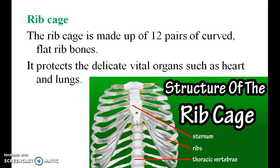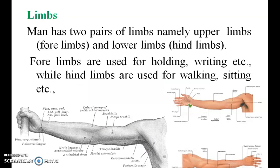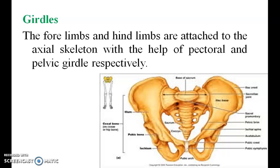The ribcage is made up of 12 pairs of curved flat ribs. It protects the delicate vital organs such as the heart and lungs. Man has two pairs of limbs, namely upper limbs and lower limbs. Fore limbs are used for holding and writing, while hind limbs are used for walking, sitting, and so on. The fore limbs and hind limbs are attached to the axial skeleton with the help of pectoral and pelvic girdles.